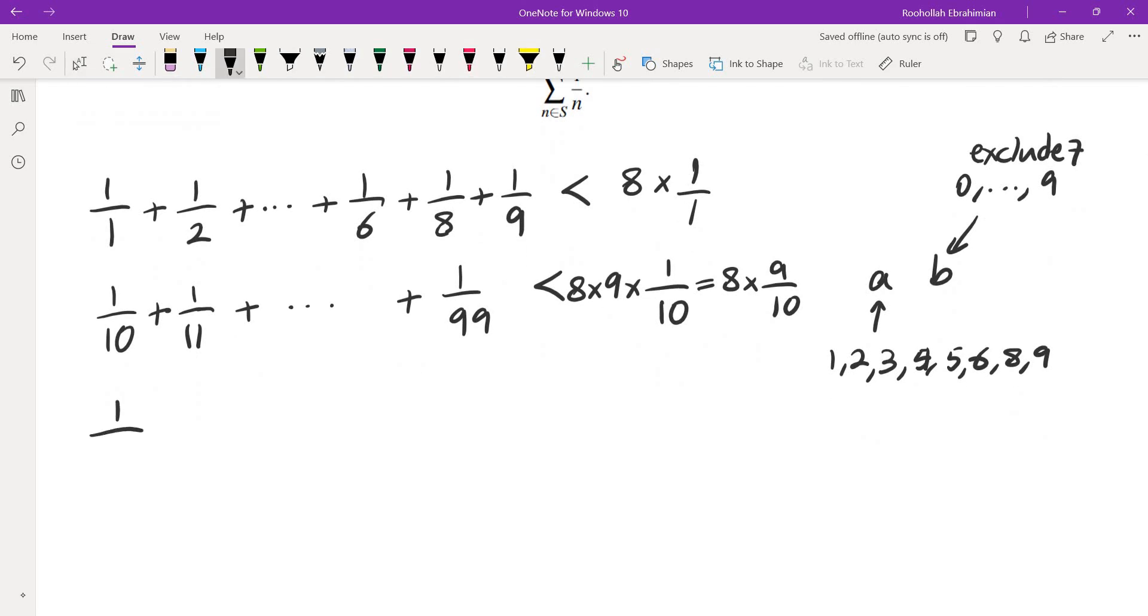If you look at the numbers with three digits, we have 1 over 100, 1 over 101, etc. And the last one is 1 over 999. We have 3 digits A, B, C.